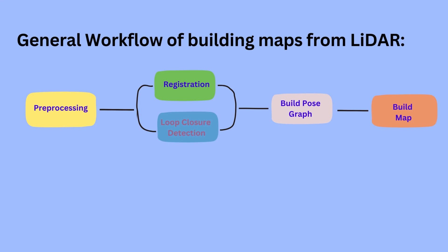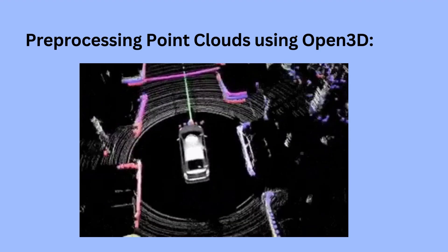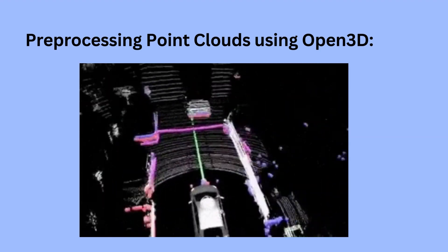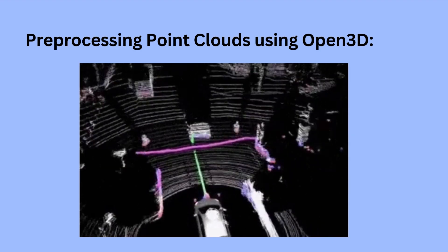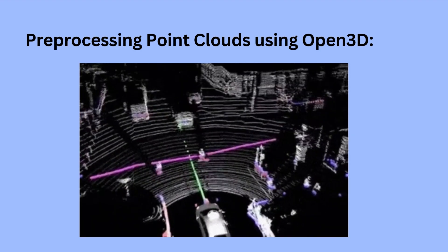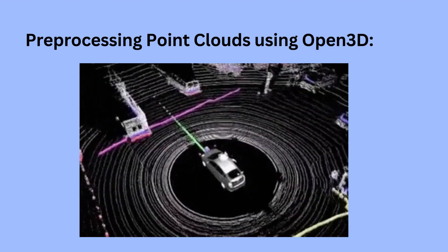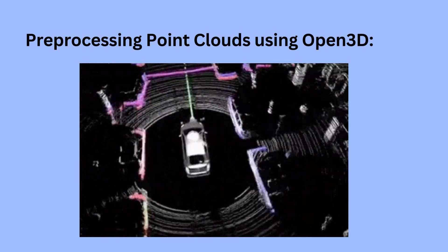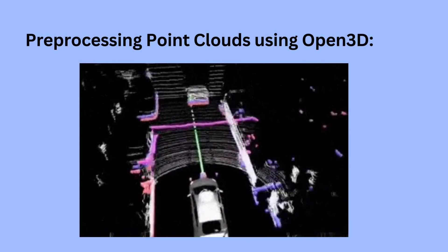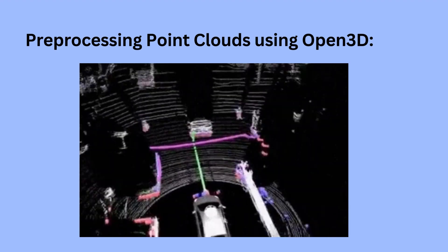IMU and GPS data is also used to properly estimate the poses used to create the pose graph. Now that we have a general idea of how LiDAR data is used to build a map, let us take a look at the different pre-processing techniques.